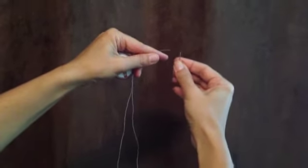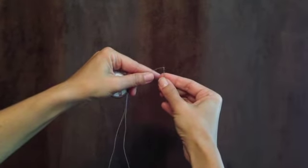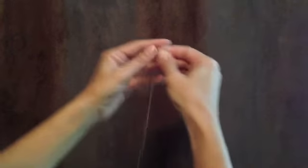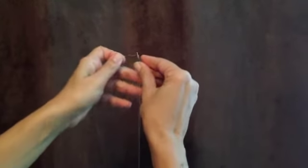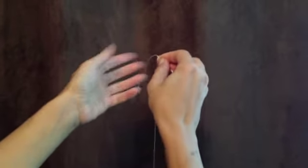So what you're going to do is take the end of your thread and put it through the needle. Once you do that, you got it through. We'll call this the tail.